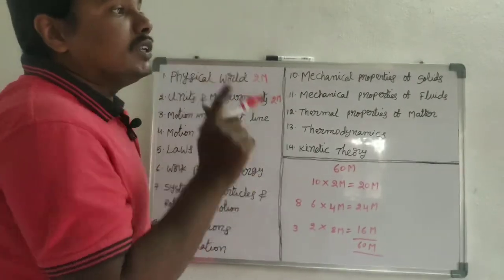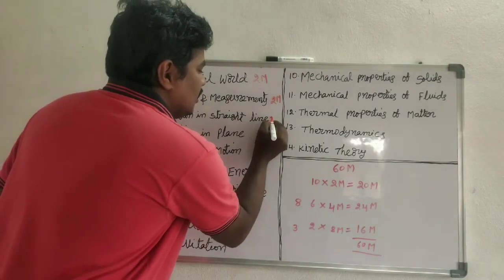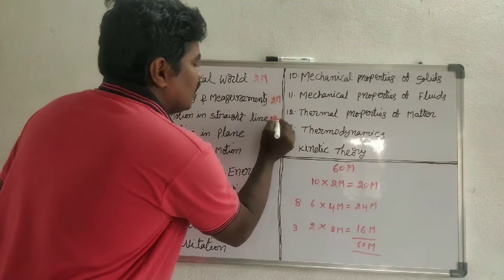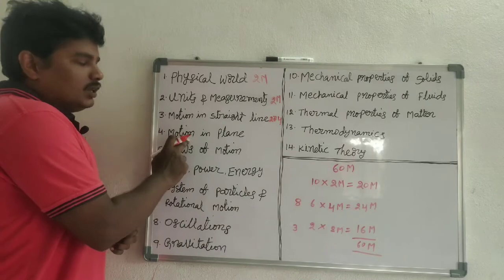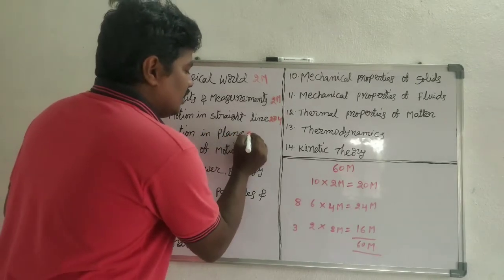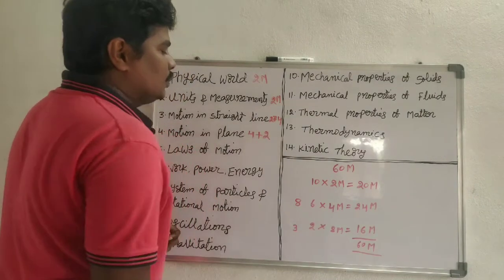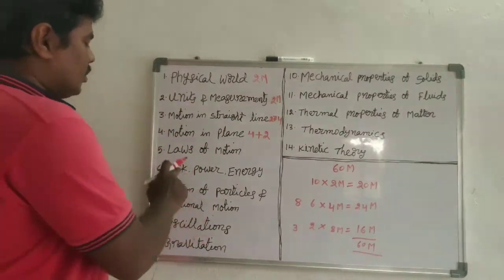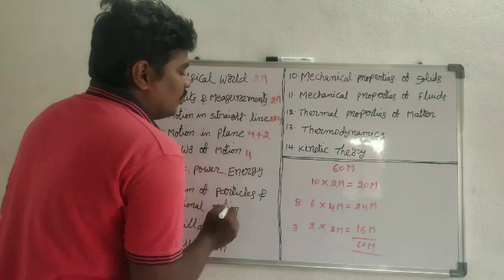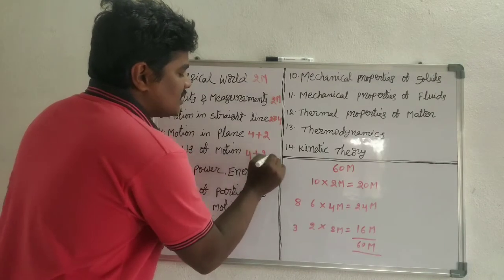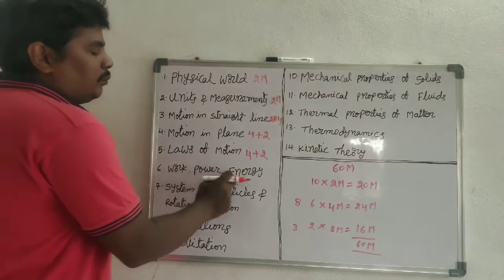The third chapter is Motion in a Straight Line — we get 2-mark or 4-mark questions. The fourth chapter covers motion in a plane — we get 4-mark questions plus 2-mark questions. The fifth chapter is Laws of Motion — here also we get 4-mark questions plus 2-mark questions.